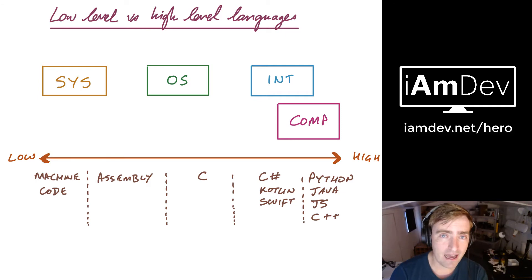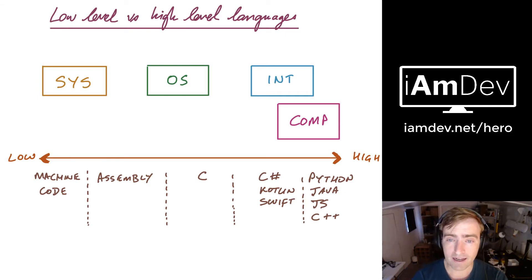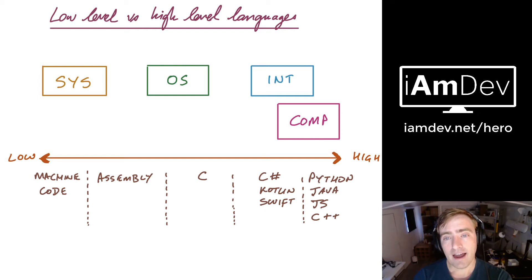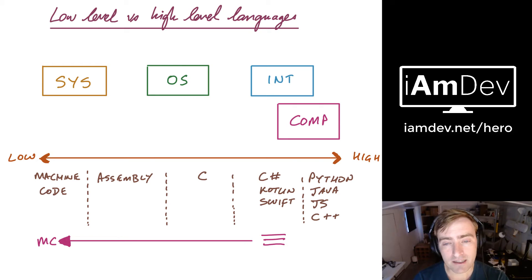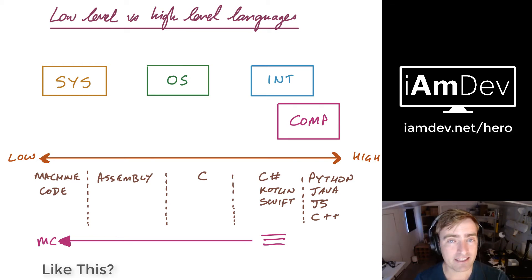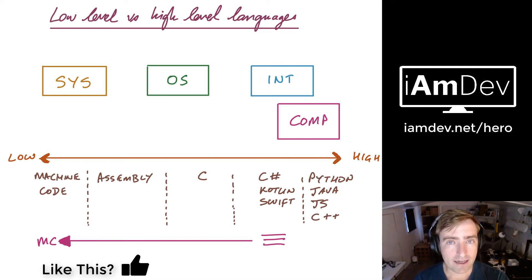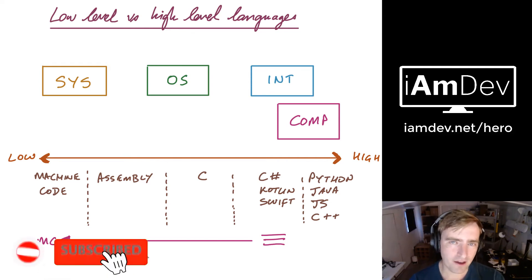Then we start moving on to languages that maybe you know and recognize, such as C#, Kotlin, or Swift. Coming back to the interpreter/compiler thing, these use a compiler to create machine code from the readable code that you have written. So whenever you build your application, that's exactly what it's doing — it's providing instructions that will later be used by the processor directly or via the OS.